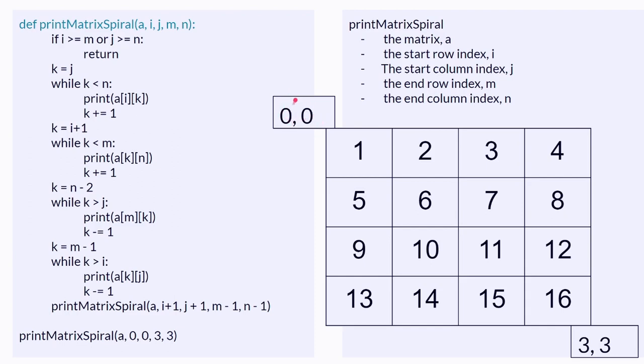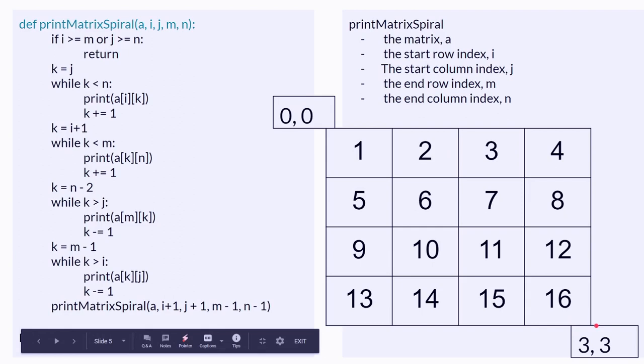This would be I, that would be J. This is M, that is N.